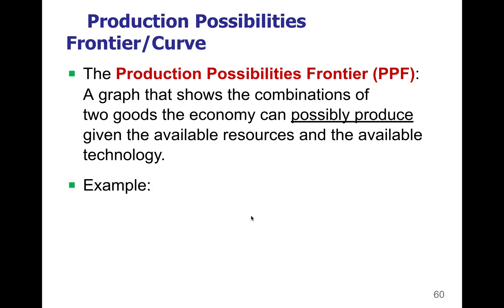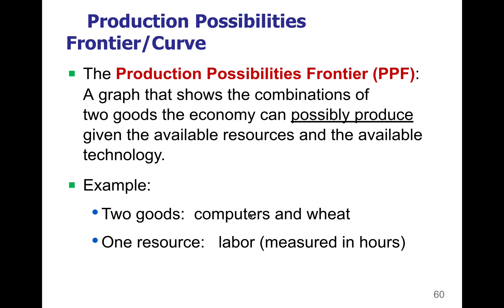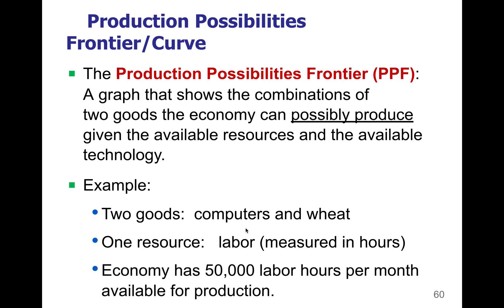In the next few videos we're going to do an example using two goods: computers and wheat. We're going to say that a particular country — the United States — has the option of producing computers and/or wheat in various combinations. You do have to measure in one resource, so we're going to measure ours in labor hours. It could also be measured in other things like acreage. For our example, this economy has 50,000 labor hours per month for production, and you have to decide how to divide those labor hours into computers and/or wheat.